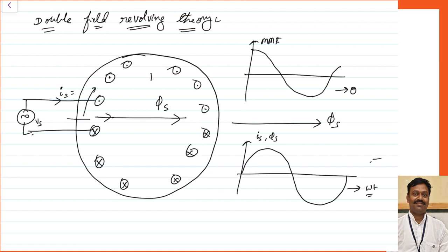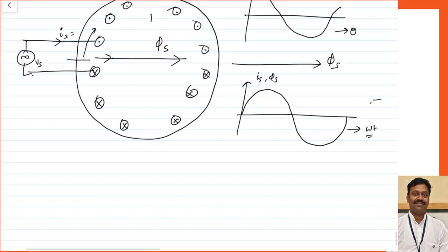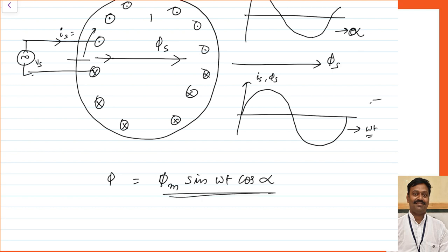As a summary, combining both, I can write the equation for the alternating magnetic field produced. The flux phi equals phi_max times sin(ωt) times cos(α), where alpha is the angle with respect to the axis — either theta or alpha, whichever angle you take. This is the form of your resultant flux wave at any point in space; at any given point it will vary sinusoidally.